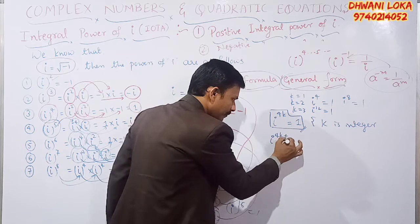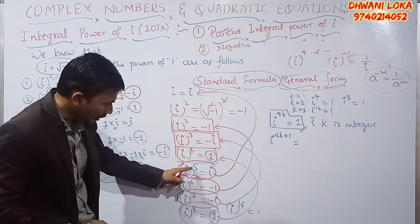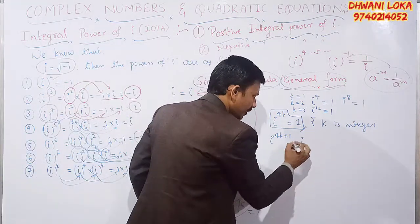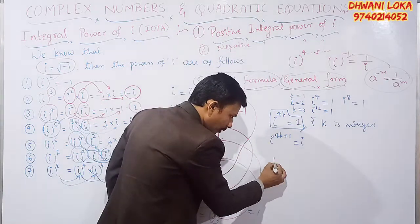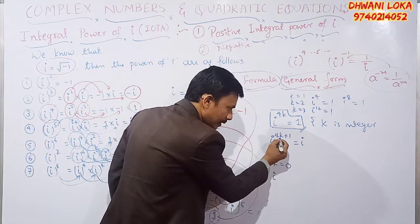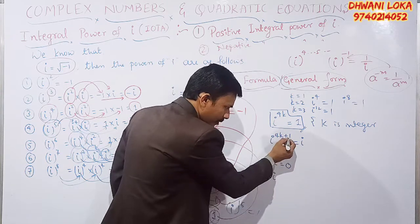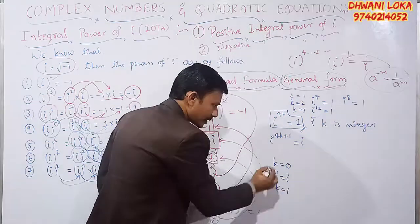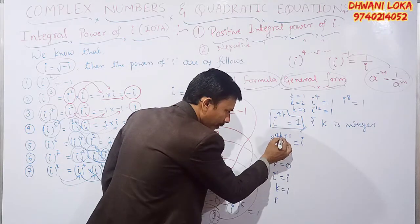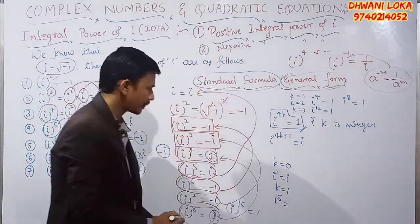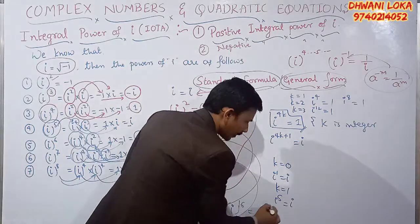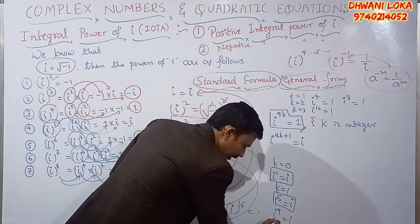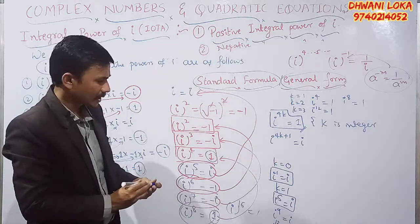Next general form: i to the power 4k plus 1 equals i. If you take k equal to 0, then 4 into 0 plus 1 equals 1, and i to the power 1 is i. If you take k equal to 1, then 4 into 1 plus 1 equals 5, and i to the power 5 is i. Therefore i to the power 1, i to the power 5, i to the power 9, and all powers of the form 4k plus 1 equal i.